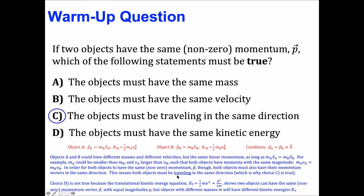Choice D is not true because if we write the translational kinetic energy equation in terms of the magnitude of the linear momentum as KE = P² divided by two times the mass, both objects can have the same magnitude of linear momentum, but the object with the lighter mass is going to have a larger translational kinetic energy. So the two objects must be traveling in the same direction, but they don't necessarily have the same kinetic energy if they have different masses.